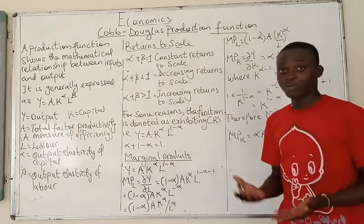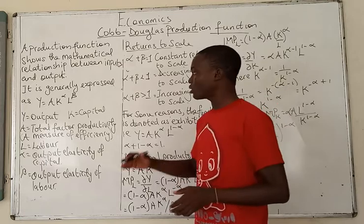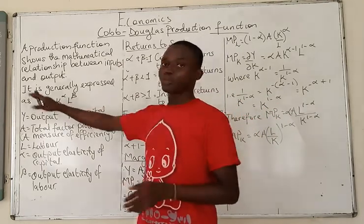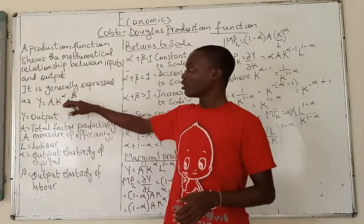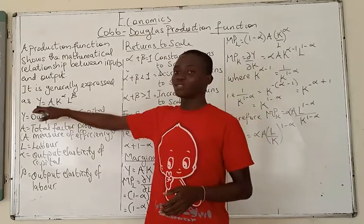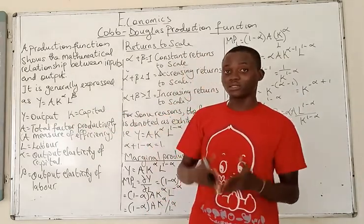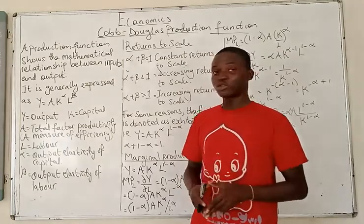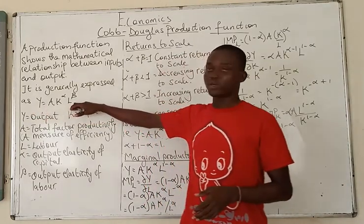Increasing returns to scale simply occurs where a proportionate change in the inputs — capital and labor — leads to a more than proportionate change in the output. So if K and L should change by, say, 50%, output is going to change by something greater than 50% — by 70%, for example. One other thing to note is that Y is directly proportional to all the variables in the function.